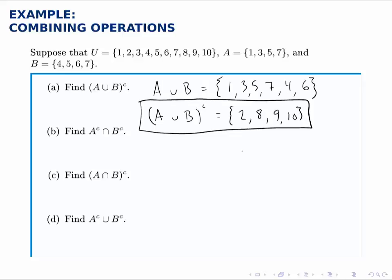In part B, we're taking the intersection of two things, and we'll start by finding A complement and B complement, and then take their intersection. So A complement is everything from the universe that's not in A, so we take away one, three, five, and seven from the universe. We get two, four, six, eight, and nine, and ten.